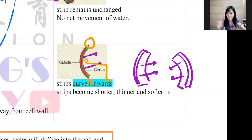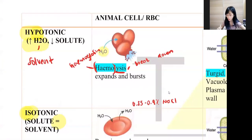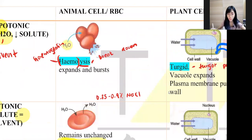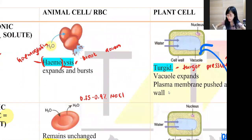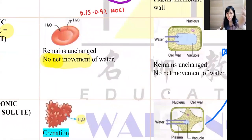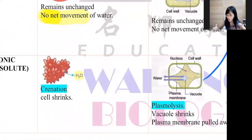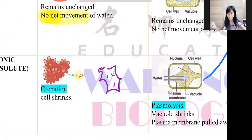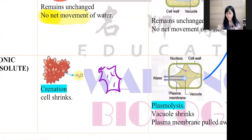Now for red blood cell and plant cell diagrams: to draw hemolysis, draw something like a bursting balloon — as long as you show they are bursting. For crenation, draw a star shape — to show they have shrunk and are no longer in a biconcave disc shape.